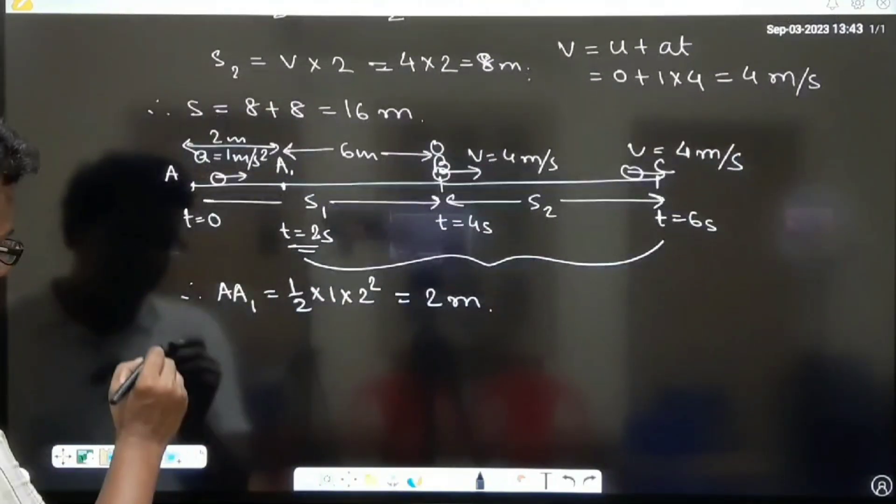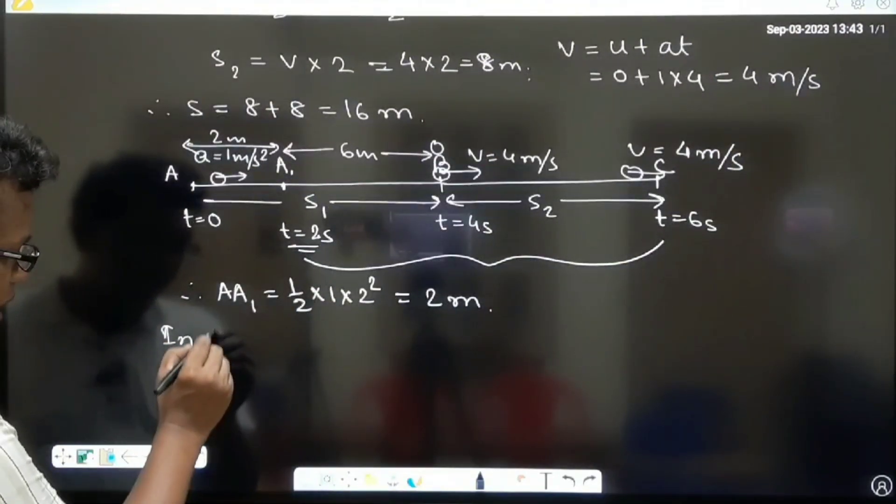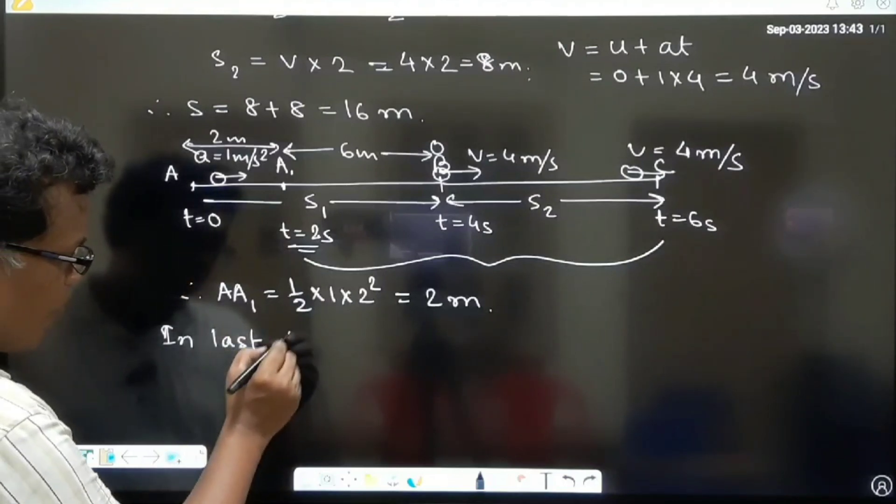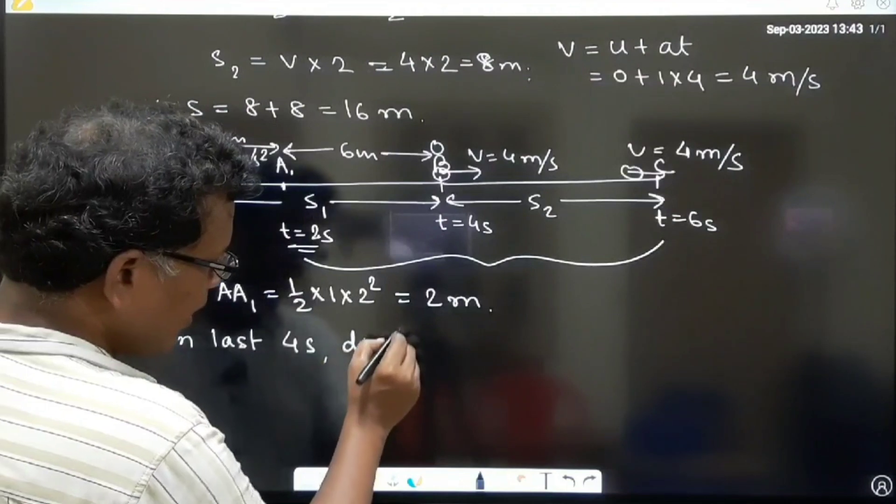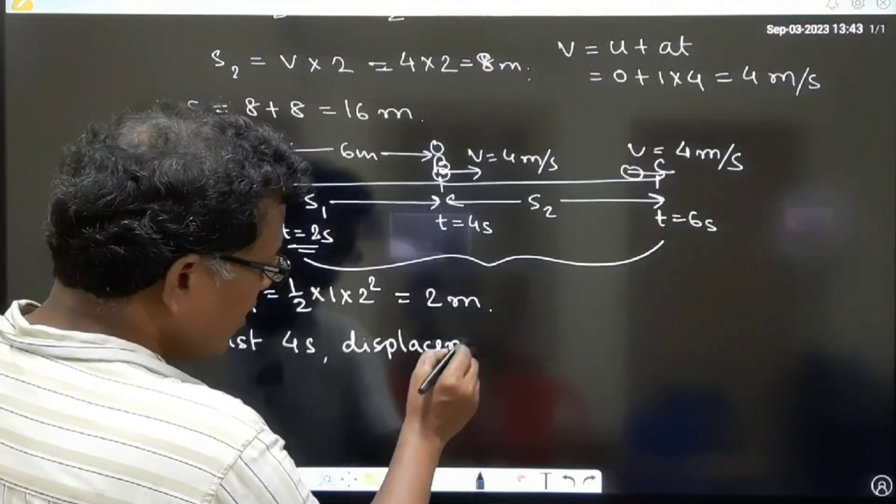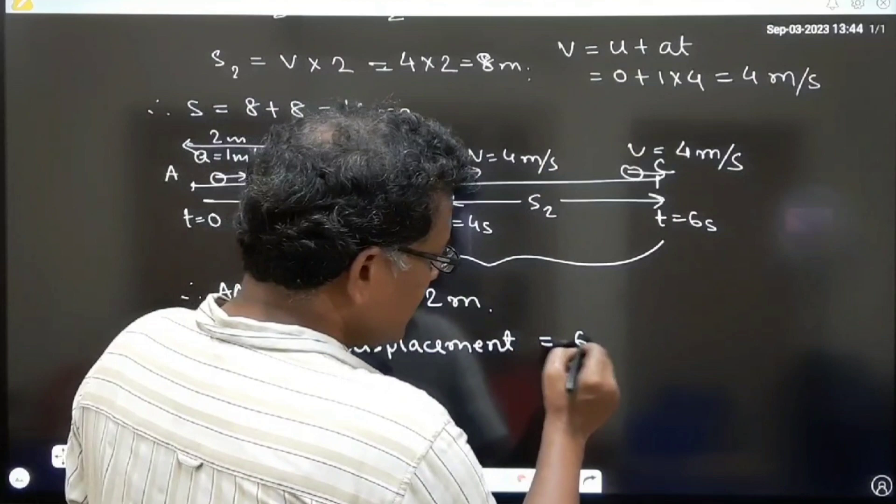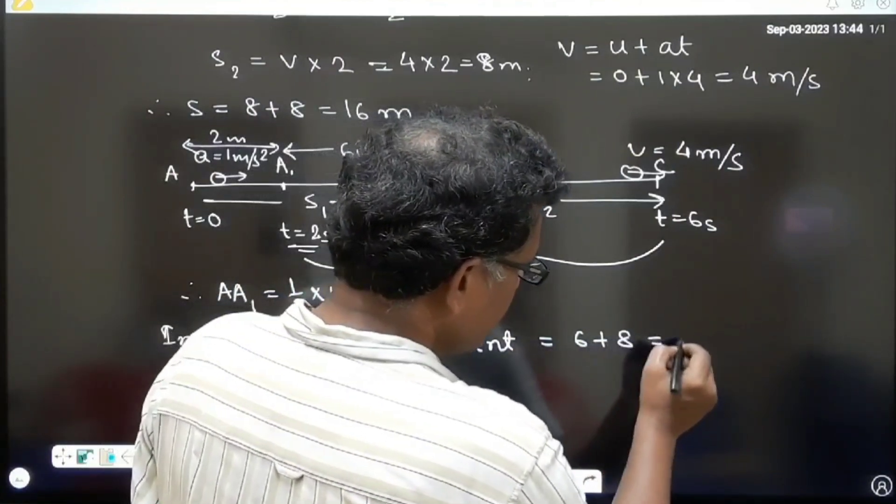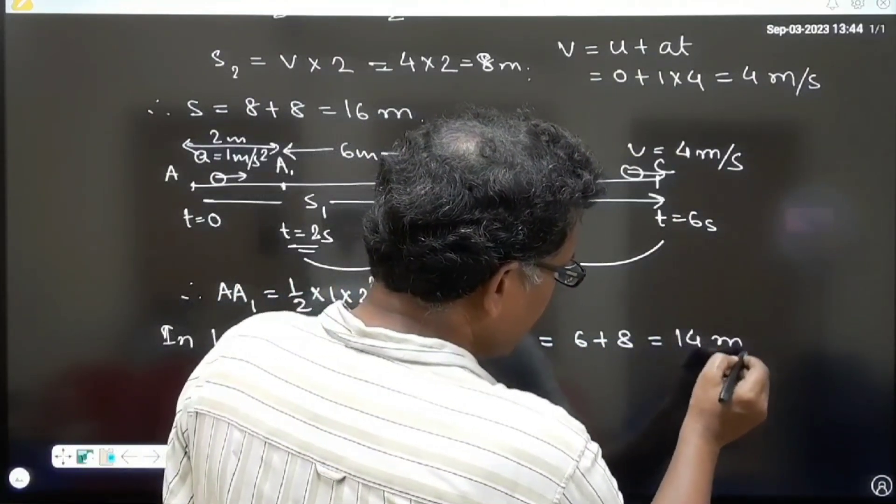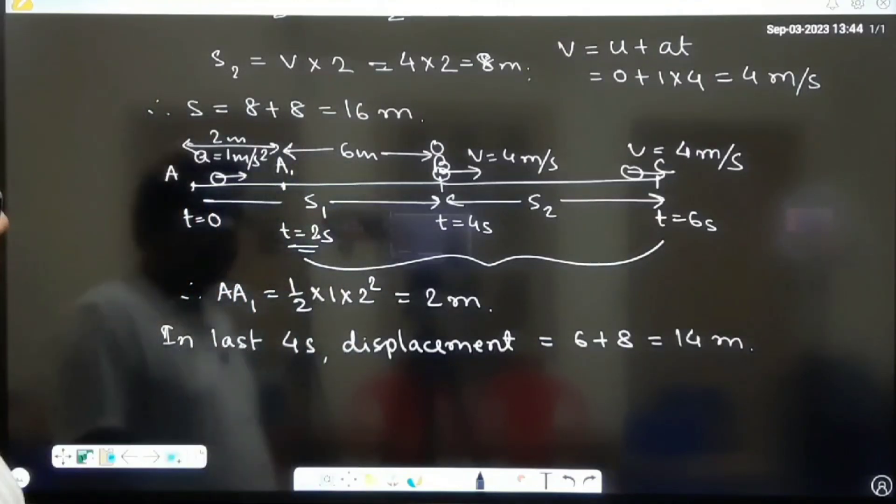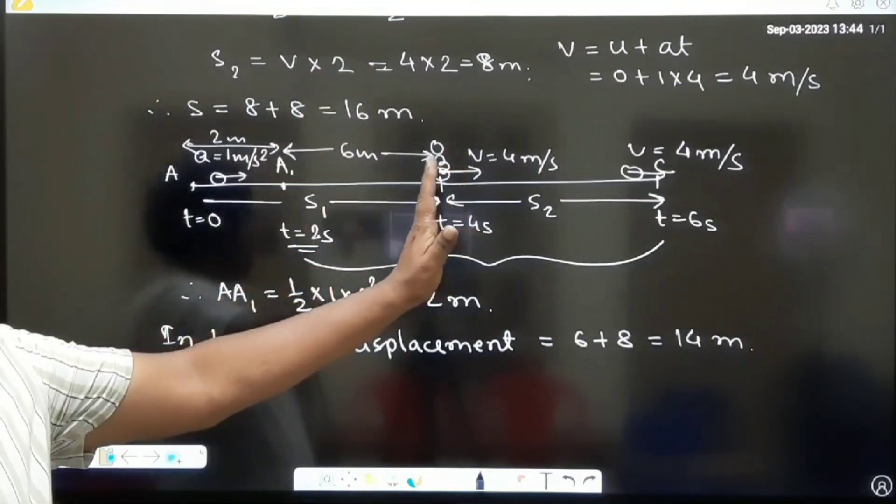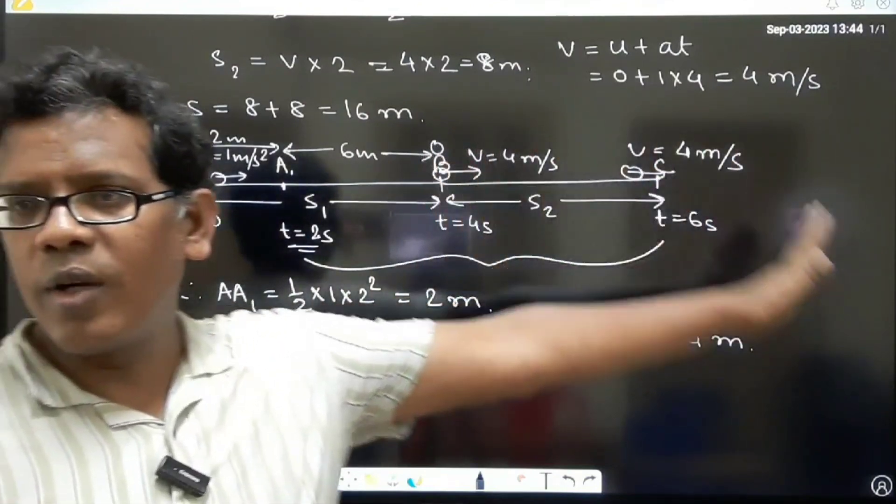Required displacement in last 4 seconds I can write down - last 4 second displacement found is 6 plus 8, 14 meter. Right, last 4 second displacement: 6 meter in accelerated part, 8 meter with the constant velocity part.